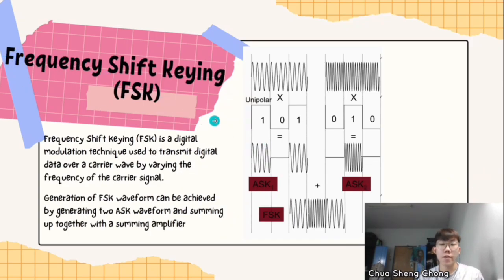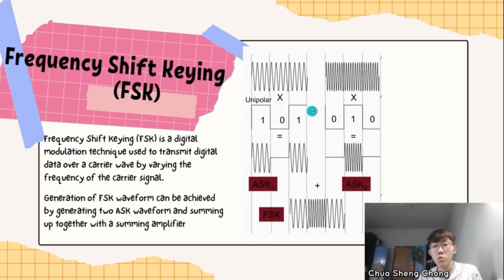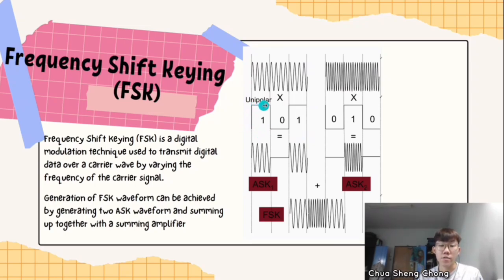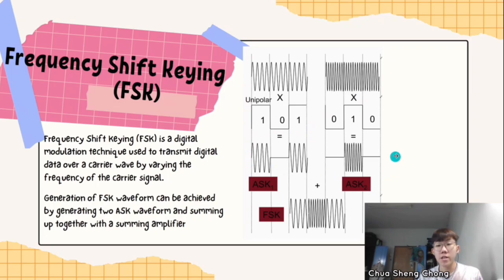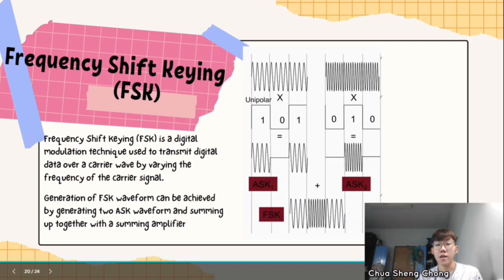For Frequency Shift Keying (FSK), this is a modulation technique that uses varying frequency of the carrier signal. Generation of the FSK waveform is done by summing two ASK waveforms using a summing amplifier. There are two carrier signals and two information signals. For the first one, the pattern is 1-0-1, and for the second one, it is the inverse, which is 0-1-0. After obtaining ASK-1 and ASK-2, we combine them together to get the FSK result waveform.